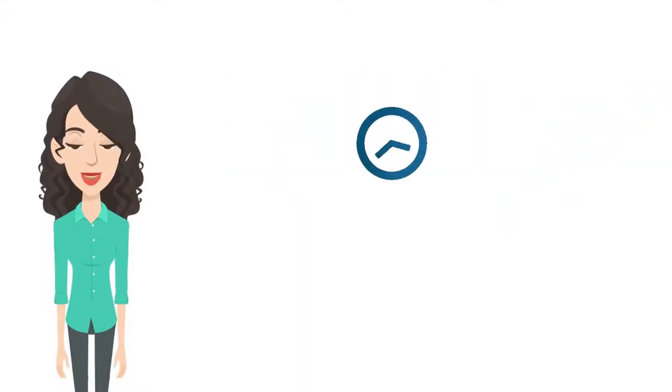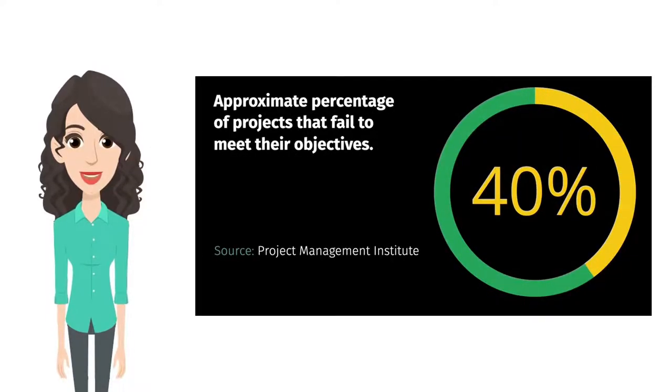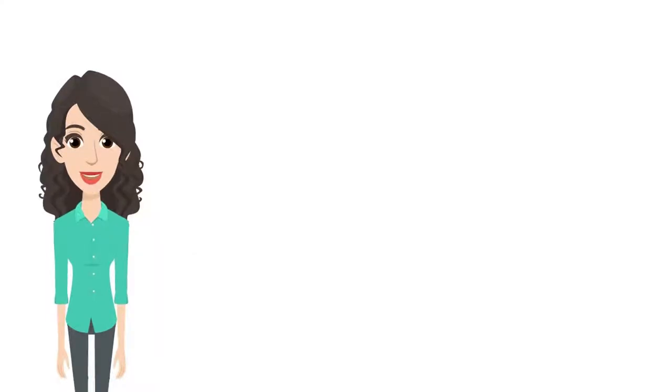rare was the project that came in on time and on budget and delivered what stakeholders expected. About 40% of the time, we didn't hit these goals, and that was when we largely worked together in the same place at the same time.